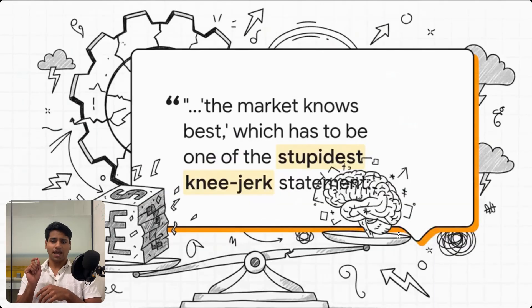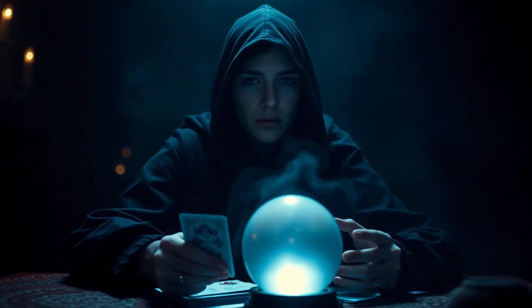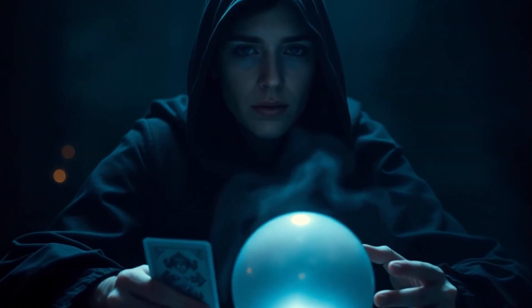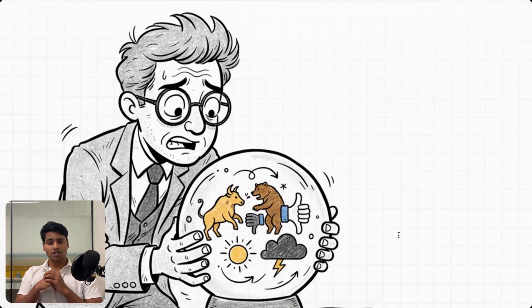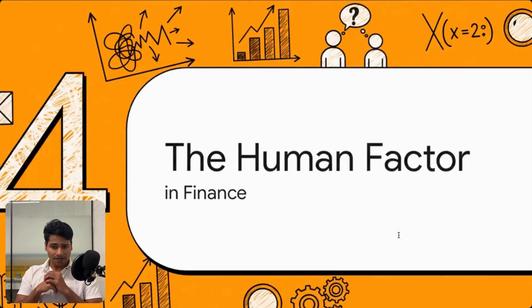And this analogy explains it perfectly: Trusting the market's current price is like trusting a fortune teller. One week you go in and she tells you you're going to win the lottery. The next week you go back and she's saying you might get hit by a bus. But both of those things can't be true. The market isn't some all-knowing oracle. It's just a reflection of the crowd's mood, and that mood can be wild and contradictory.